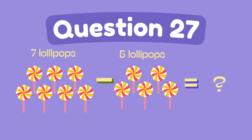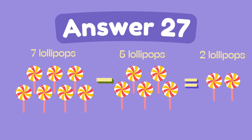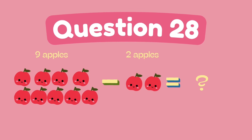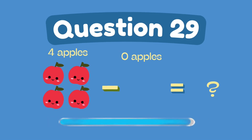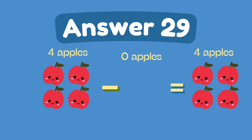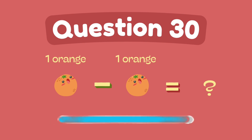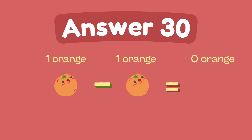What is 7 minus 5? The answer is 2. What is 9 minus 2? The answer is 7. What is 7 minus 1? The answer is zero.